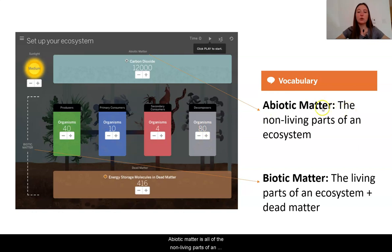Abiotic matter is all of the non-living parts of an ecosystem. So, you might notice here, this is talking about the air, the sun, parts of the ecosystem that are not alive.